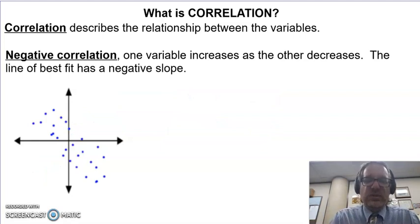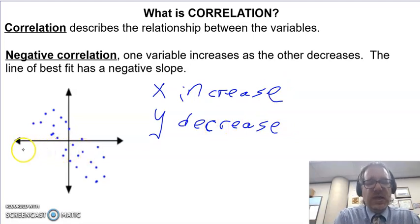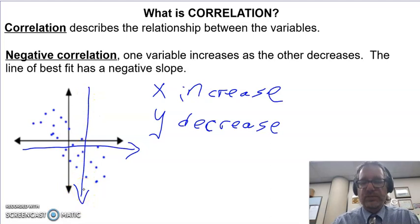We can have a negative correlation. This means X will increase and Y will decrease. X will increase, Y will decrease. As X goes to the right, Y goes down. And you can kind of see that with that trend line or our best fit line.